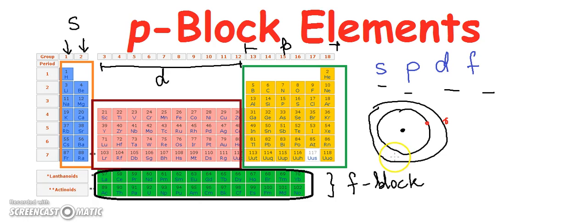The elements belonging to the S and P block in the periodic table are called representative elements or the main group elements.